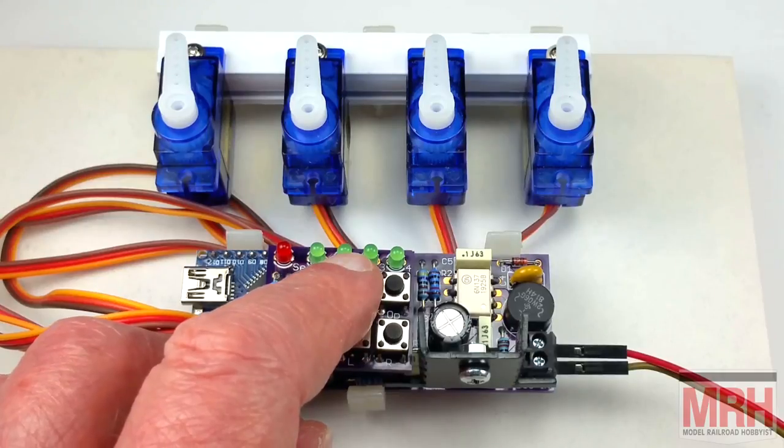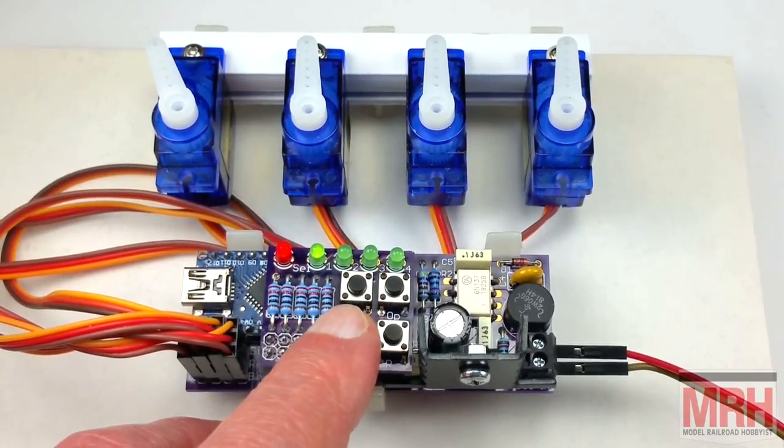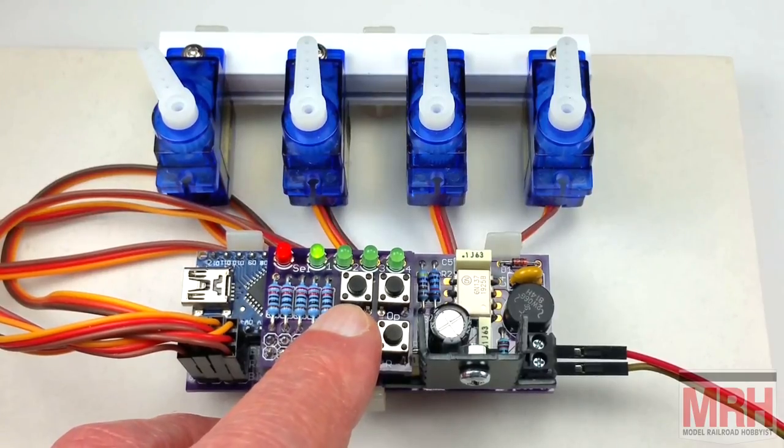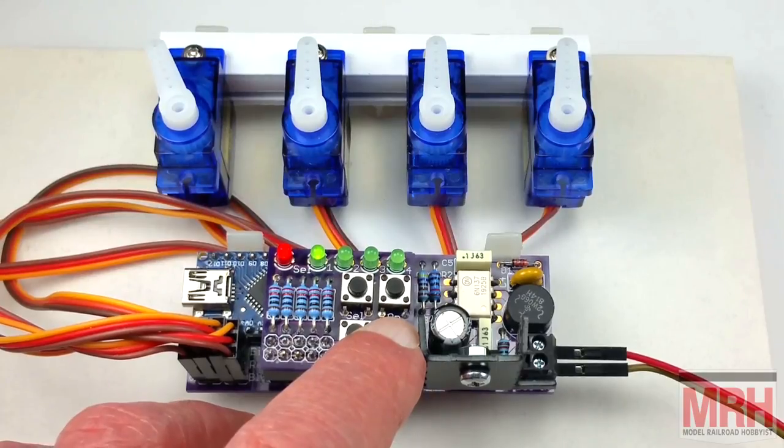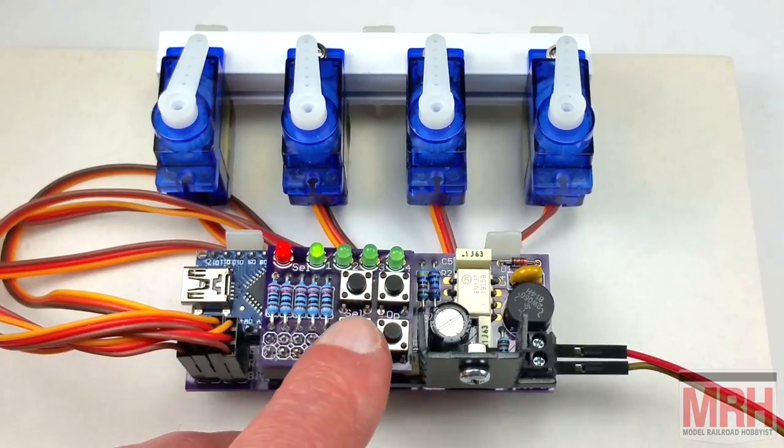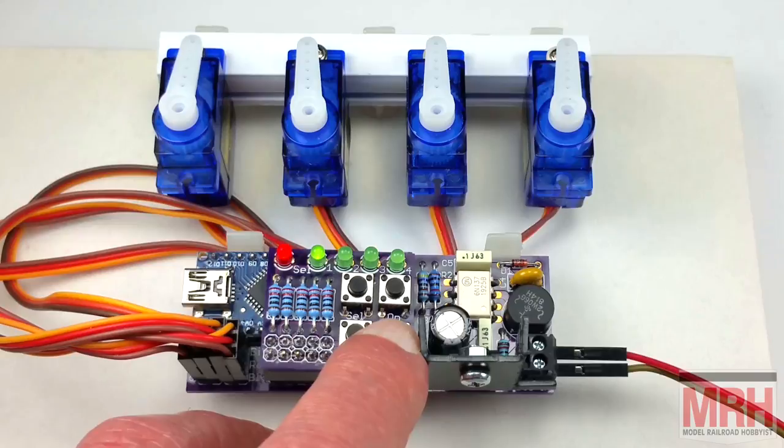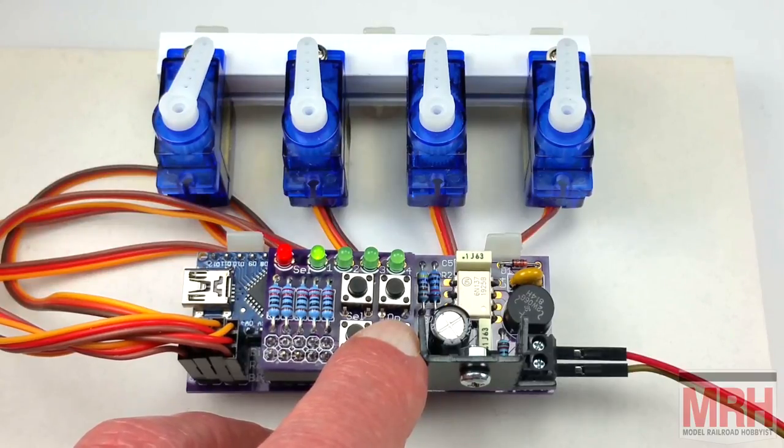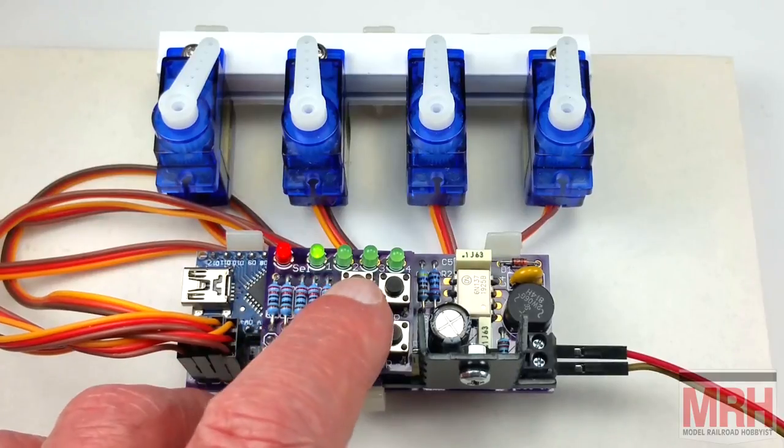We can now begin to set up servo 1 which moves to the left position. We can adjust it by pressing the left button or the right button. It moves the arm one degree at a time. When we're happy with the position we press select again and adjust the rightmost position for that servo. Again you can just hold down the button for continuous movement. When you're happy press select.